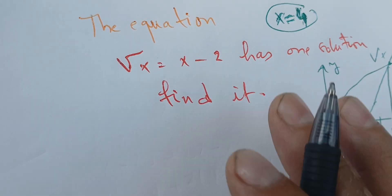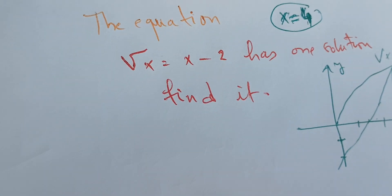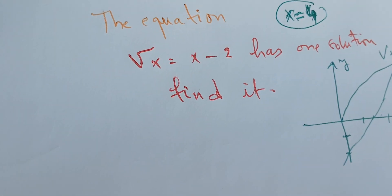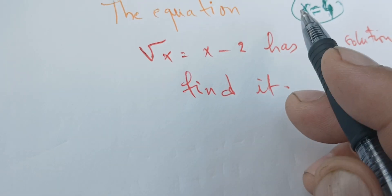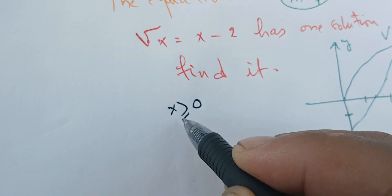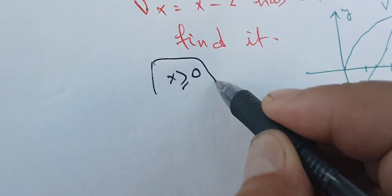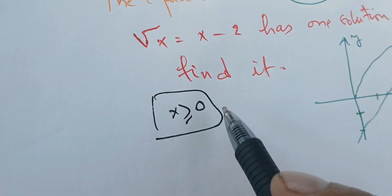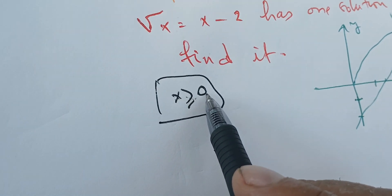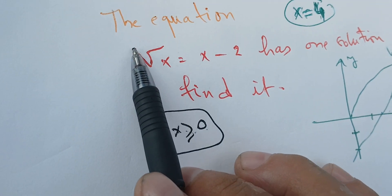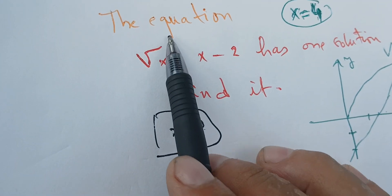So the method we use to solve this problem is the key. First, note that this equation has a solution only if X is greater than or equal to 0, because for the square root of X to be defined, we need X to be greater than or equal to 0.